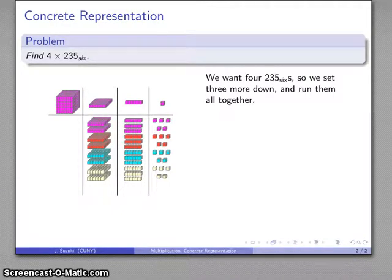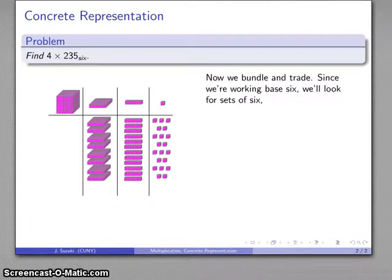I'm going to run them all together. Addition is a compilation of objects. I don't need those colors anymore, they were just to keep track. Because I'm working in base 6, I need to bundle and trade, looking for groups of 6. Here they are: group of 6, group of 6, group of 6, and a couple left over.